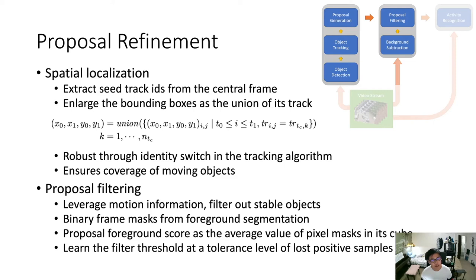At this point we have successfully generated proposals as spatial temporal cubes and defined how to get those temporal windows. For spatial localization, we extract the seed track IDs from the central frame within each temporal window and enlarge the bounding box as the union of its tracklet within the cube. This method is robust to identity switches in the tracking algorithm, as we use seeds only from the central frame, but it also ensures coverage of moving objects.